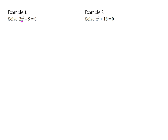I can see in my equation x is being squared, then it's being multiplied by 2, then 9 is being subtracted. So the first thing I'm going to do is add 9 to both sides. Now I'm going to divide both sides by 2. And lastly I will square root, remembering that when I take the square root, I could have the positive or negative square root of 9 over 2.